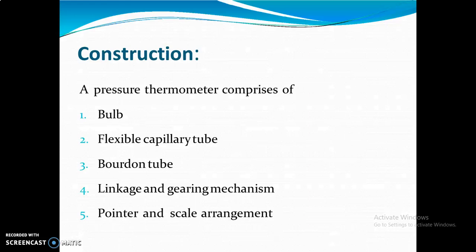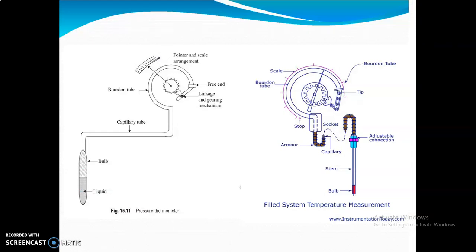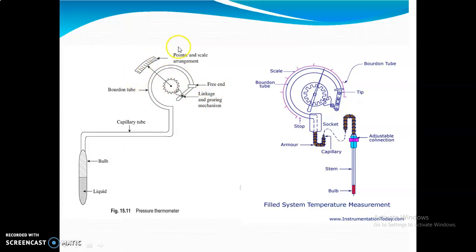The pressure thermometer consists of several components: a bulb, a capillary tube, a Bourdon tube, a linkage and gearing mechanism, and a pointer with scale arrangement. Looking at the diagram, the liquid is kept in one part and is heated. The liquid expands or contracts, and this action is directly connected via the capillary tube to the Bourdon tube. One end of the Bourdon tube is a free end; the other is connected via the linkage and gearing mechanism, which consists of a spring with a pointer and scale arrangement.